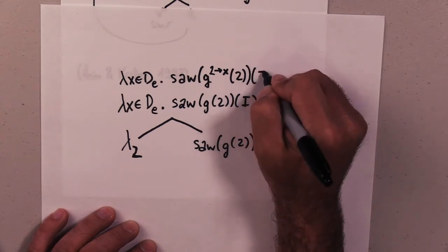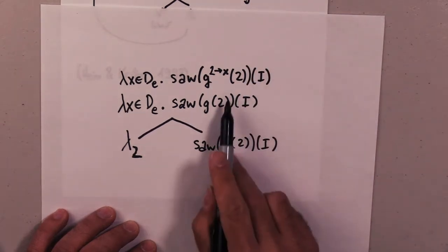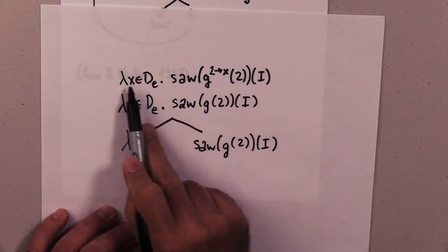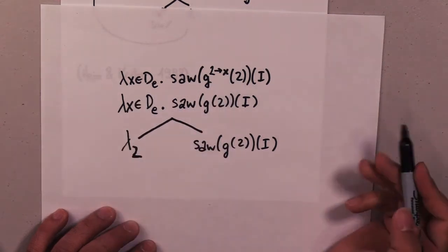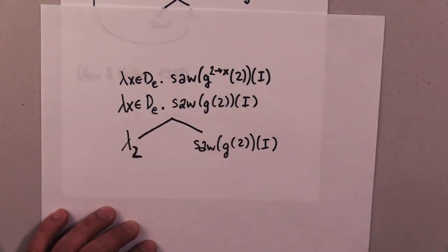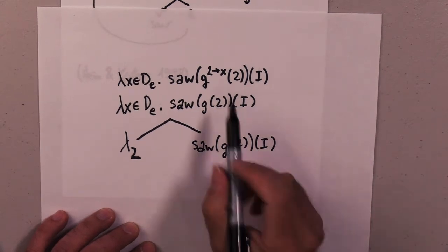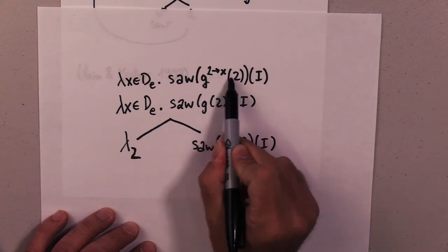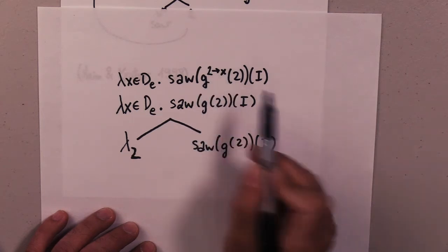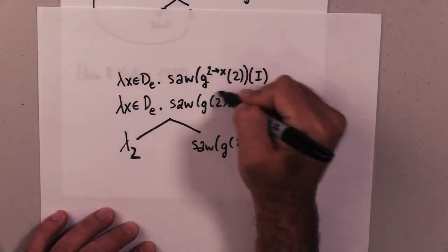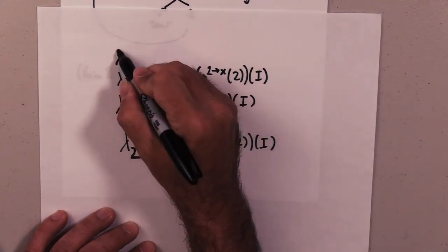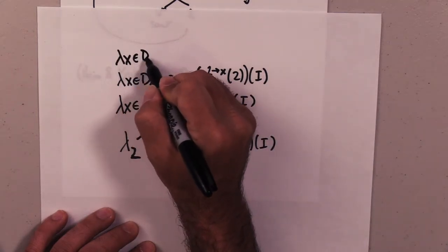So whatever this assignment was, now anytime we have 2, it's going to turn into x. That's our modification, that's the heart of the rule. Then we can convert because we can plug this in and apply it. When you plug in 2, you get x, so we can now replace this whole thing with x and x in D sub e.